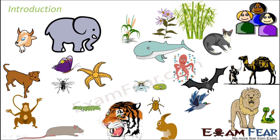Now, reproduction in living organisms — what do we mean by reproduction? To reproduce new organisms of its own kind. For example, if you look at a tiger, a tiger gives birth to another tiger. So they give birth to the same species.